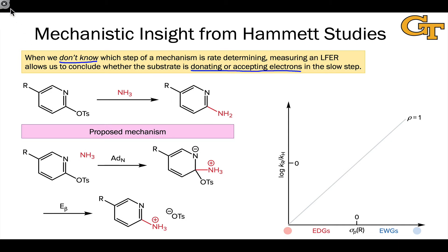Notice that in this mechanism, the substrate is serving in two different roles in the two elementary steps. In the first elementary step, the substrate is serving as an electrophile. We would expect electron withdrawing groups to accelerate that step.